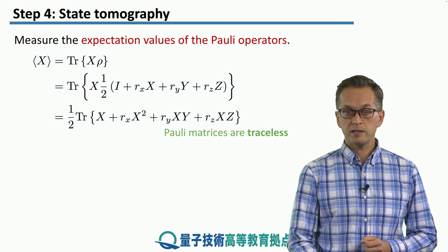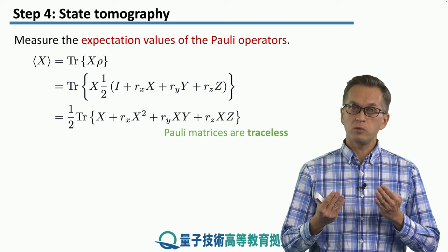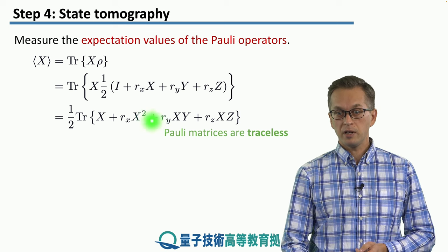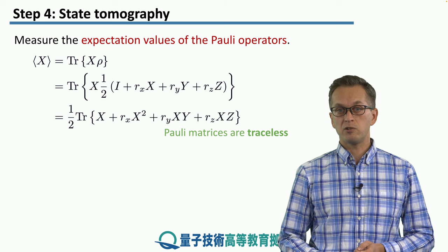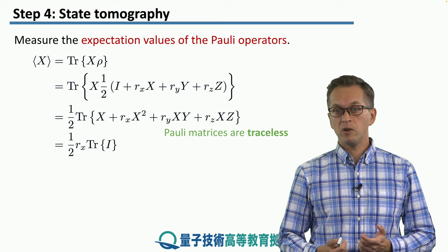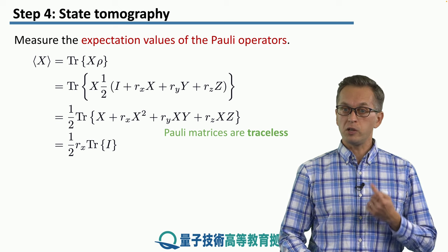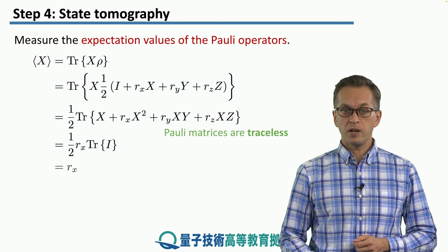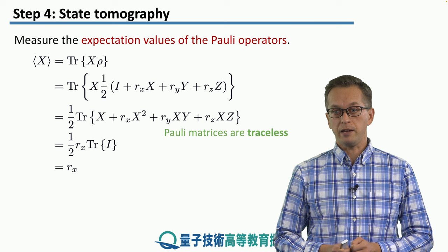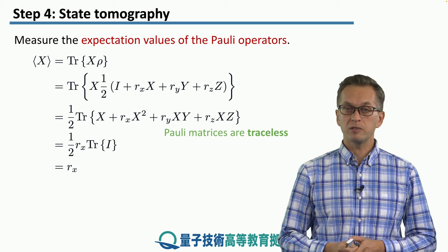And now comes the step where we realize that the Pauli matrices are actually traceless. So if we take the trace of the first term, trace of the Pauli X matrix, that is equal to zero. Also, if we take two traceless matrices and we take their product, the product is also traceless. So the third and the fourth terms also vanish. Their traces are zero. So the only term that we are left with is the X squared term. And we know that X squared is just equal to the identity matrix, and the trace of the identity matrix is equal to two. Therefore, we can say that the expectation value of the Pauli X operator is equal to rₓ. So this is how we find out the components of the Bloch vector. We have to measure the expectation values of the Pauli operators.